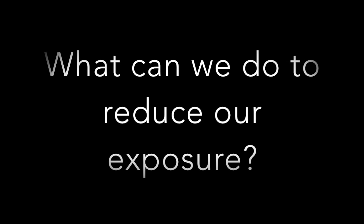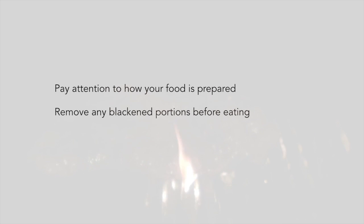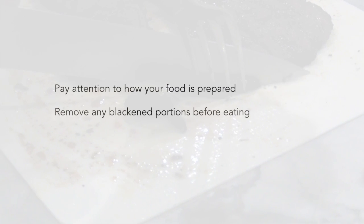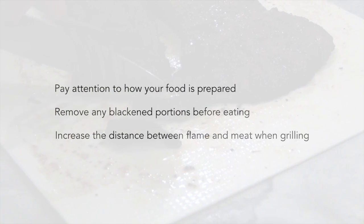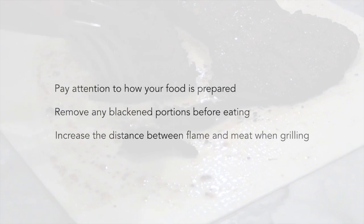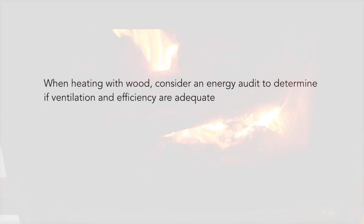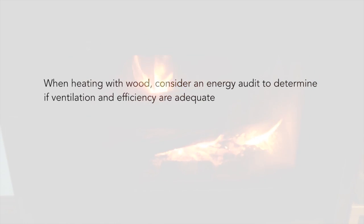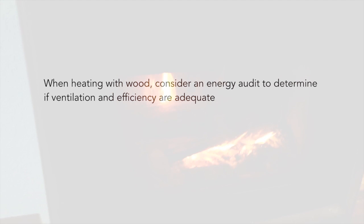How can we reduce our exposure to PAHs? Fortunately, there are some relatively easy things you can do on a personal level to reduce your exposure. Pay close attention to how you cook your meat. If you grill or char-broil your food, it doesn't take long to remove the blackened portions of your meat. If you can adjust your grill or smoker to increase the distance between your flame and the meat, it may take longer to cook, but it should be less charred. If you heat your home using a wood-fired stove, consider having an energy audit to determine if you have an efficient stove and that it ventilates properly. Some cities and counties even offer credits to replace old wood stoves with more efficient models.